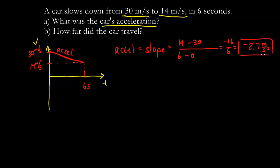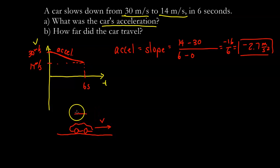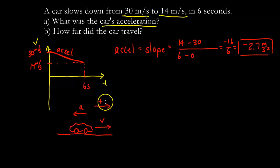The negative sign means the acceleration is in the negative direction. The car is moving toward the right and slowing down, so the acceleration is in the opposite direction. Making right positive: the velocity is initially in the positive direction, and since it's slowing down, the acceleration is in the negative direction.